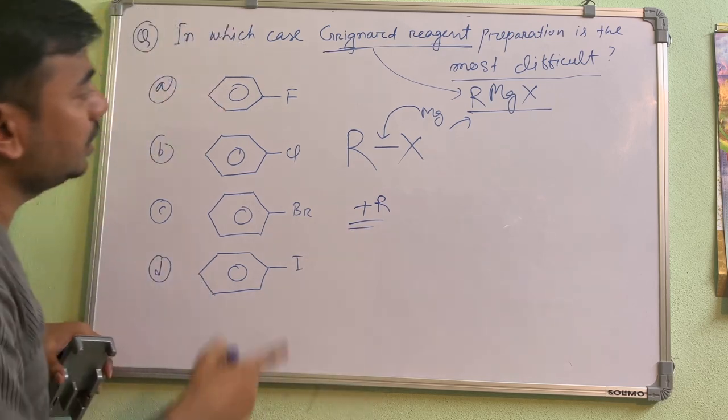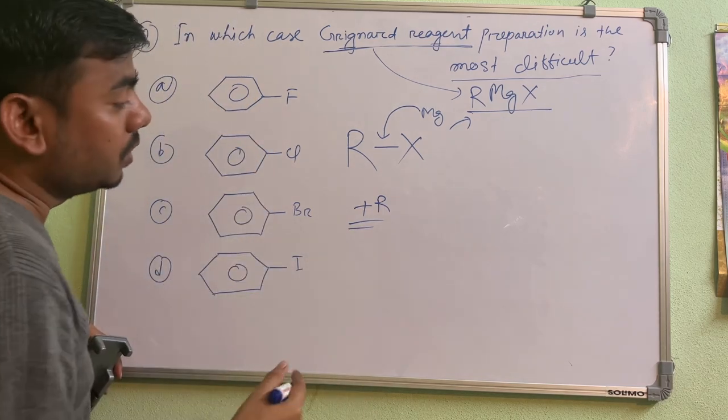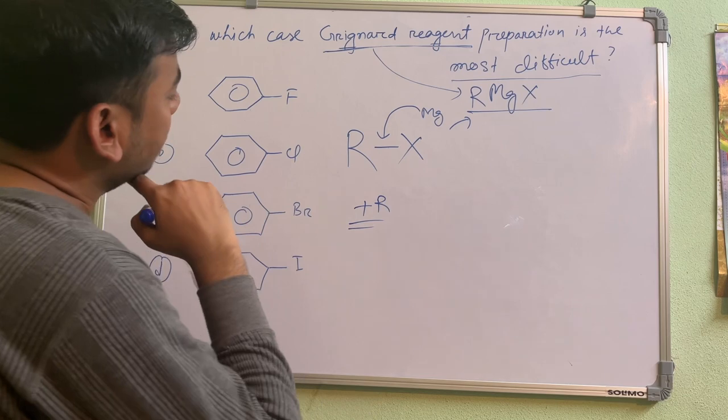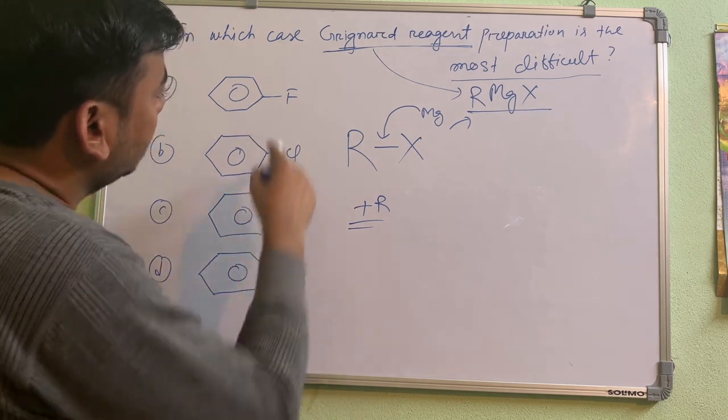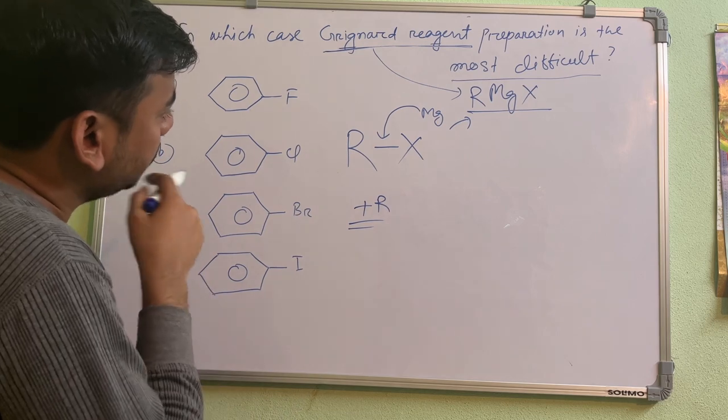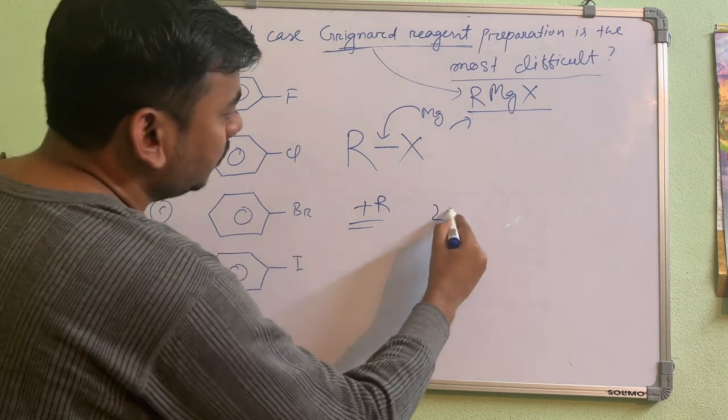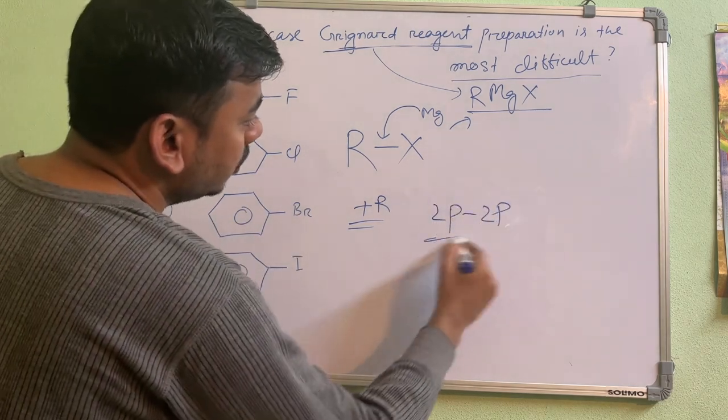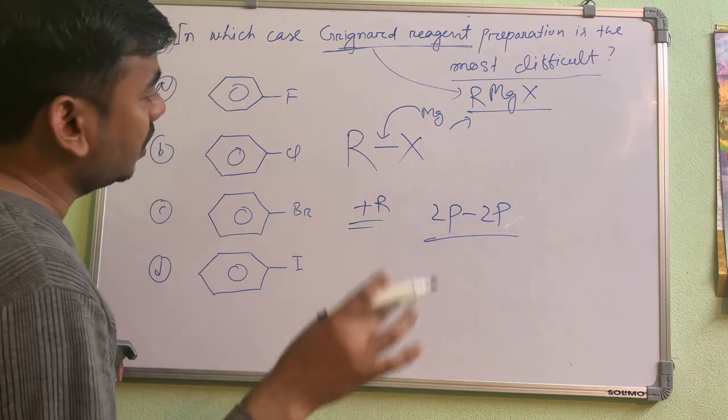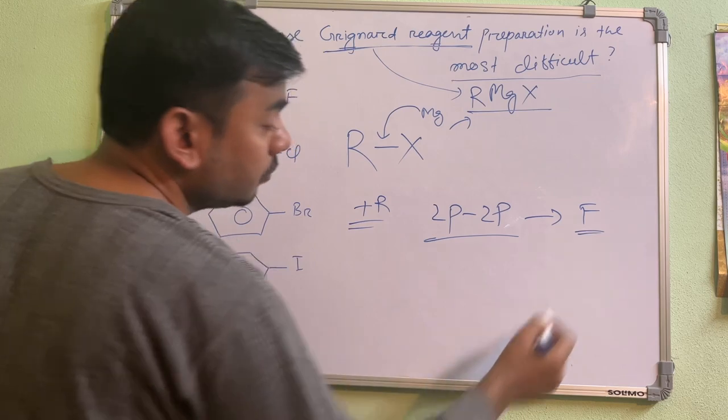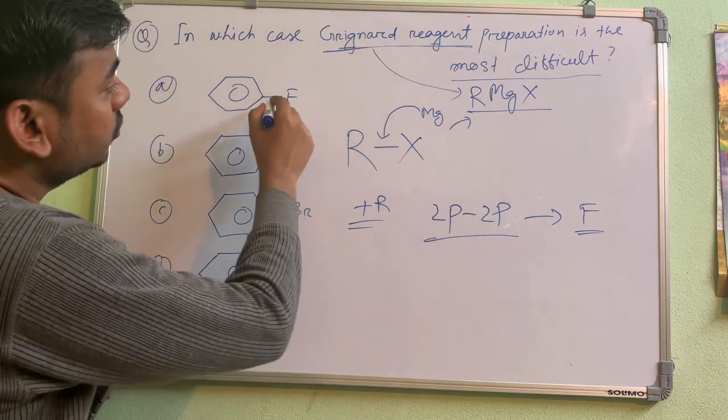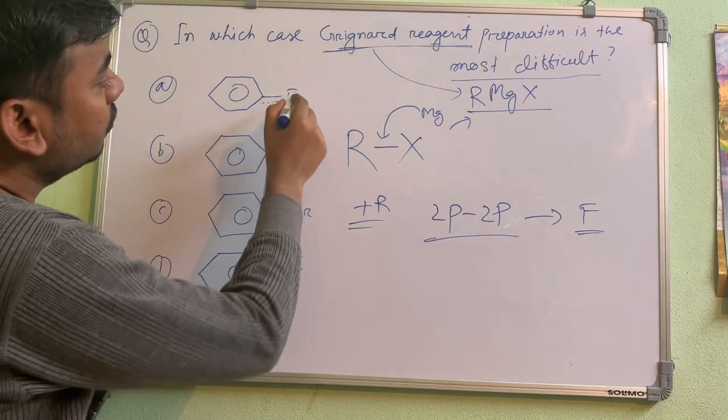And due to plus R it will make kind of double bond. And double bond will be most strong because carbon is sp2 and here you need to say which one is 2p or 3p. 2p-2p overlap is more powerful than 2p-3p or 2p-4p. In case of others, this is only possible in case of fluorine - 2p-2p overlap. So this one will be kind of more powerful double bond compared to others.